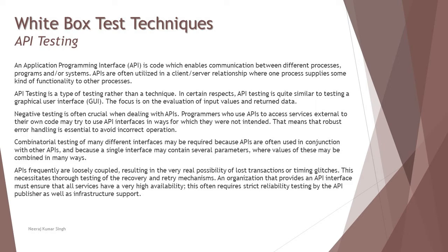Combinatorial testing of many different interfaces may be required because APIs are often used in conjunction with other APIs. When integrating third-party software or a payment gateway into an online shopping application, the shopping application has its own set of APIs and the payment gateway has another set. Testing the conjunction of these is really important to ensure there are no conflicts or compatibility issues. APIs are also frequently loosely coupled, meaning they may have different interactions resulting in the real possibility of lost transactions or timing glitches, which necessitates testing the recovery and retry mechanism as well.